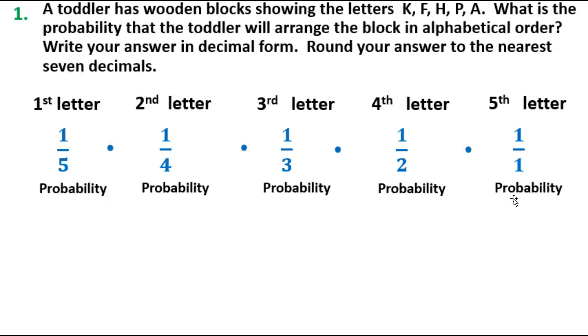We can plug that into our calculator as 1 over 5 factorial. 1 over 5 factorial is 0.083333333. This problem asks us to round to the nearest seven decimals, so you'll notice this one is rounded to the nearest seven decimals. That's pretty much it on this one.